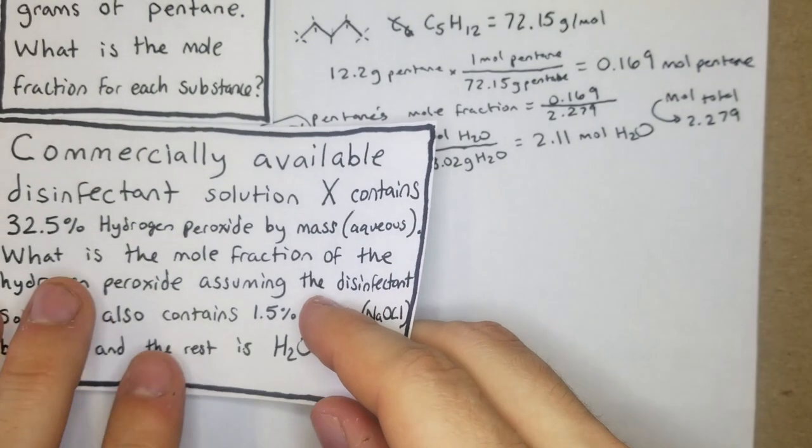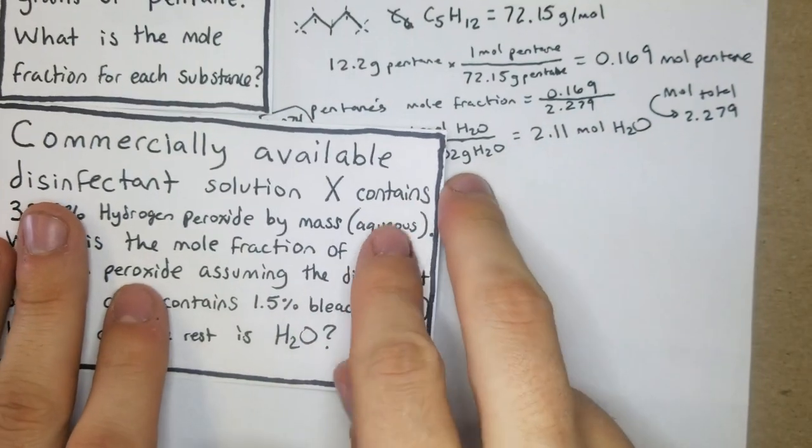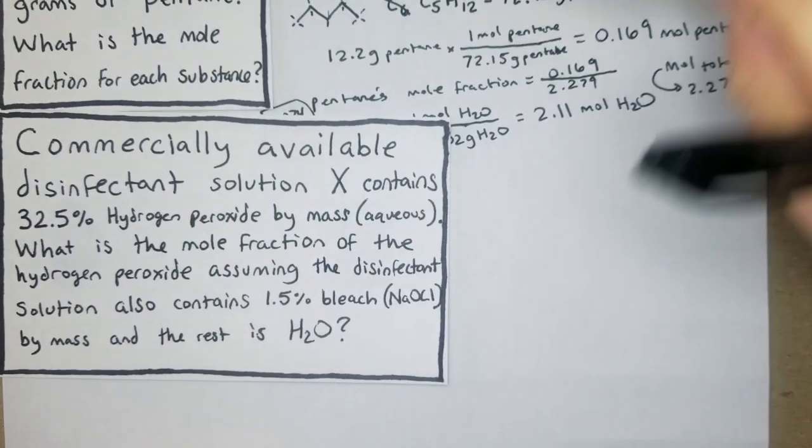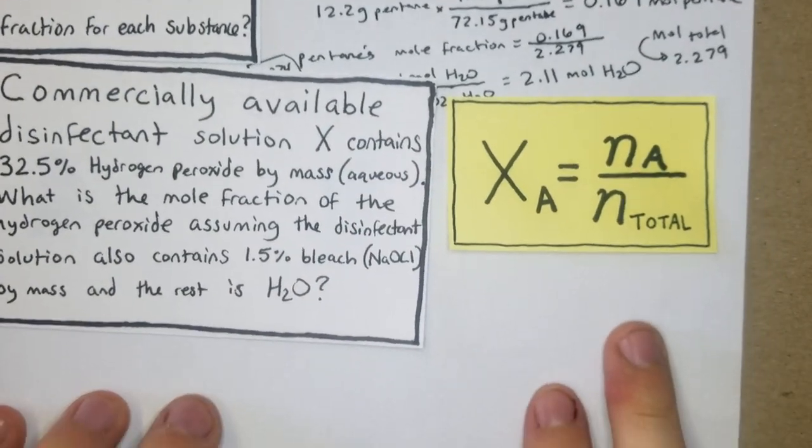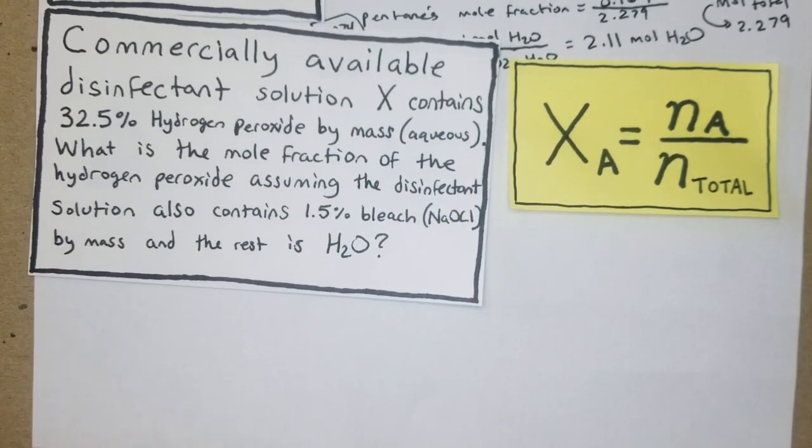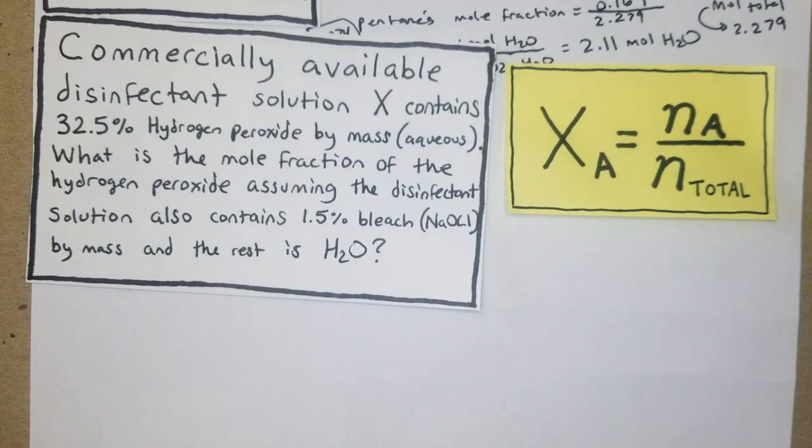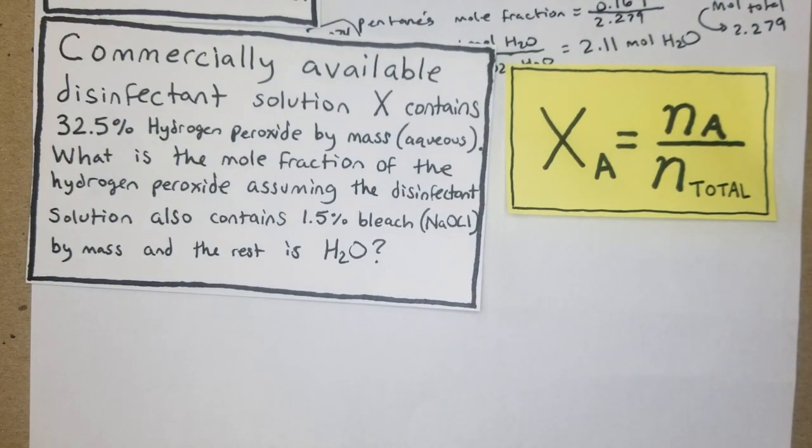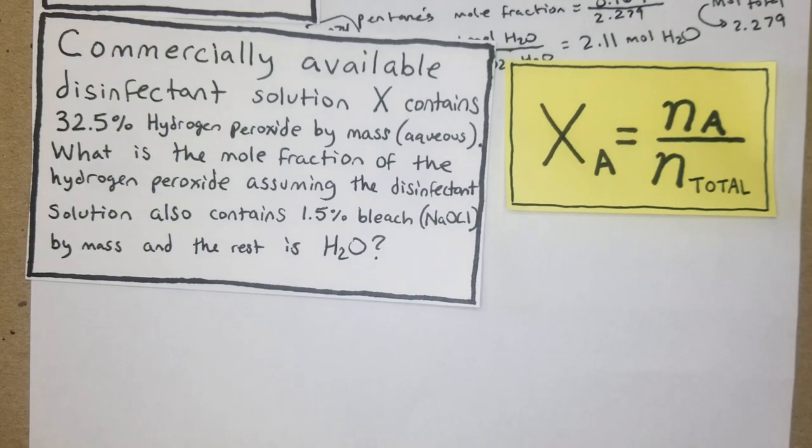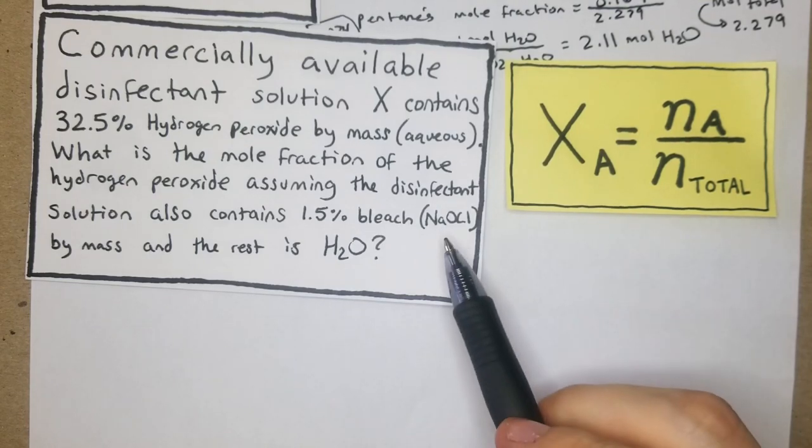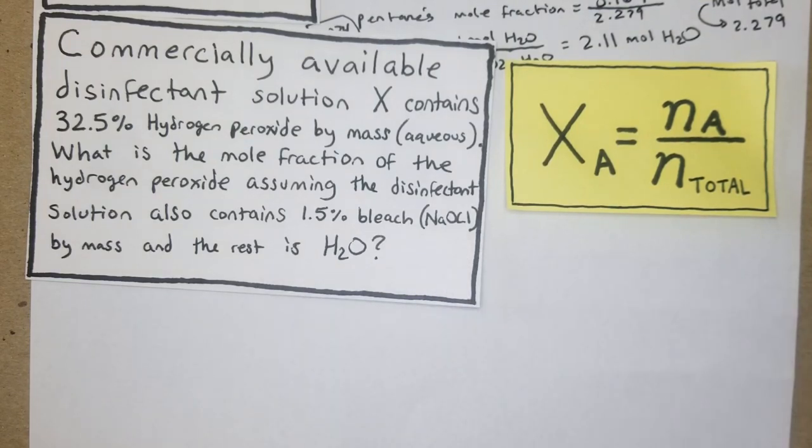So this one is going to take up a bit more space. Commercially available disinfectant solution X contains 32.5% hydrogen peroxide by mass (aqueous). What is the mole fraction of the hydrogen peroxide, assuming the disinfectant solution also contains 1.5% bleach, which is NaOCl by mass, and the rest is water?